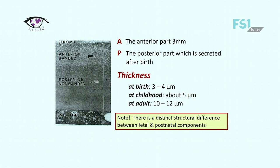Here you can also see information about thickness at birth, childhood, and adults. After birth, the thickness of the Descemet's membrane is increasing until approximately 12 microns.